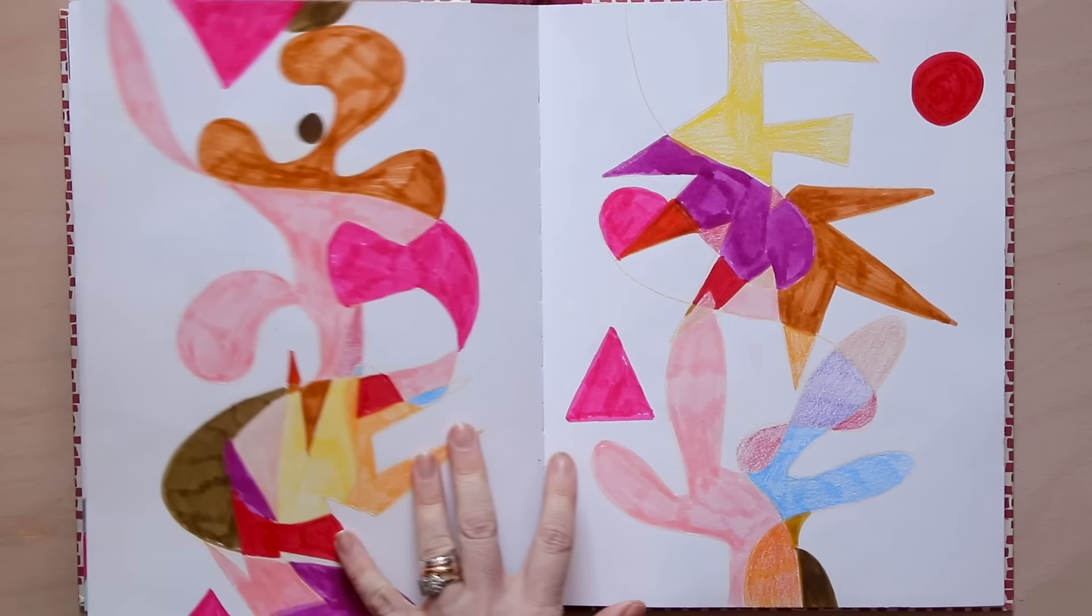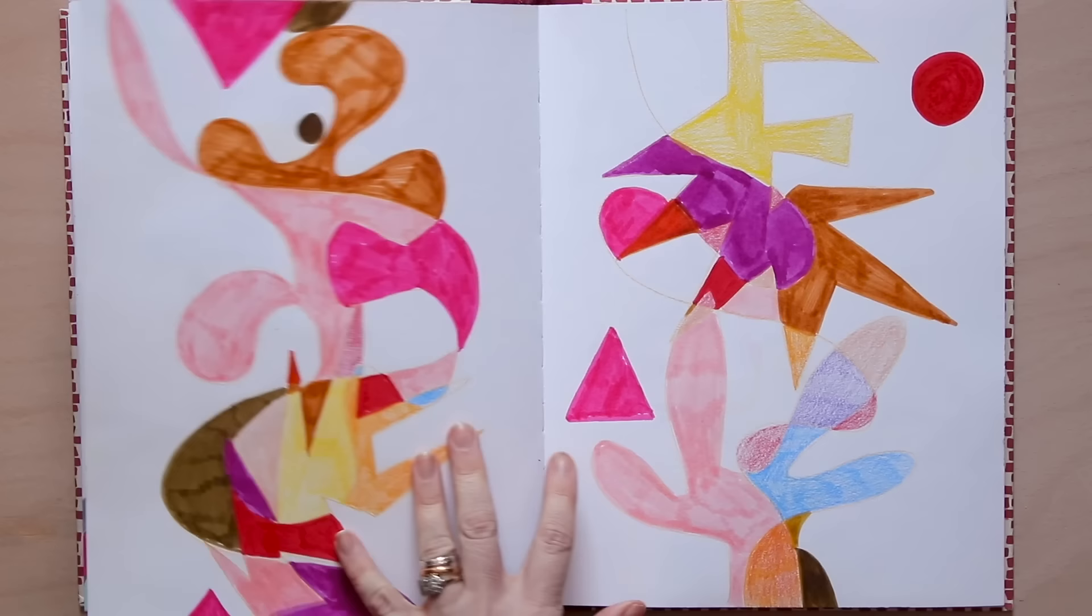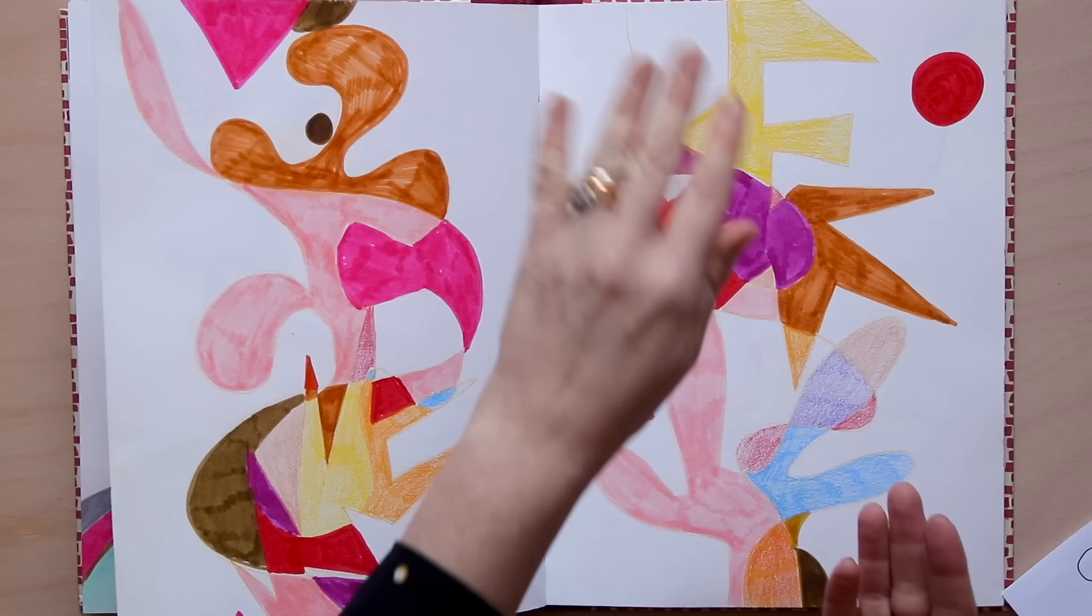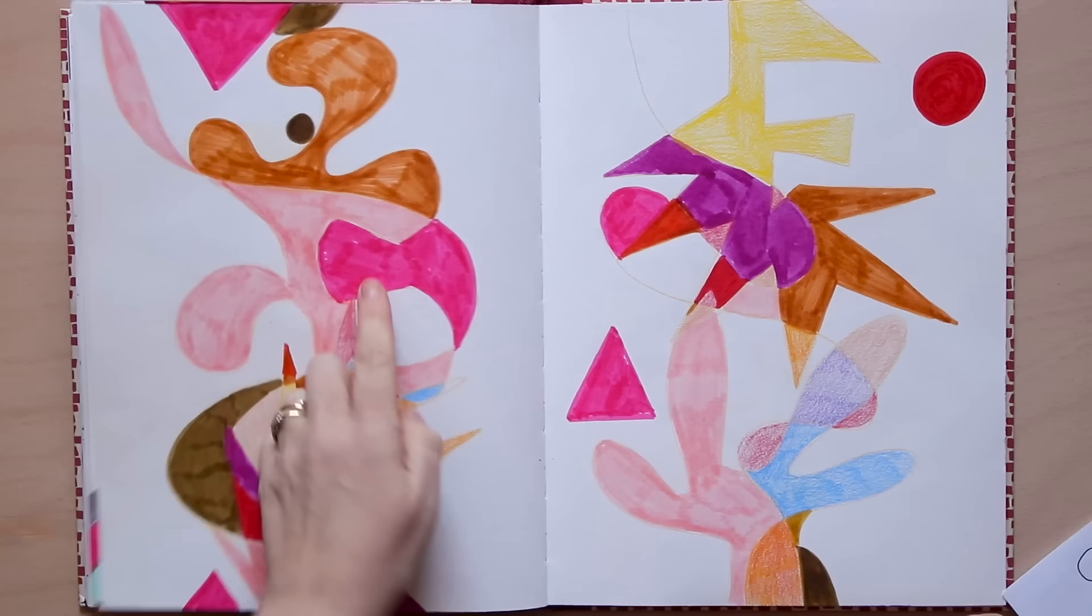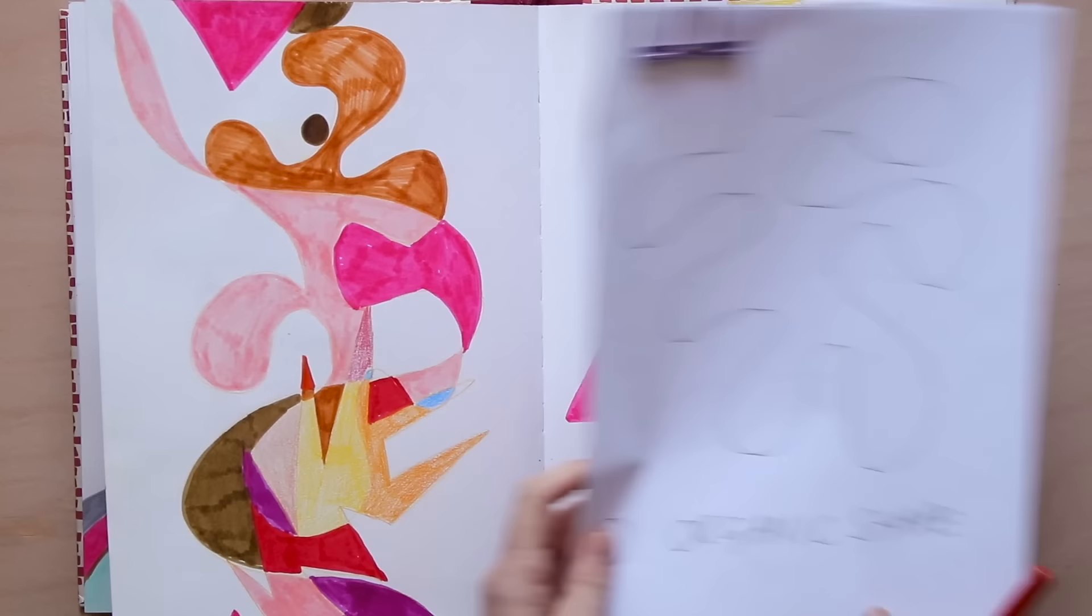So these pages were made by overlapping shapes on top of shapes. And when you draw a shape on top of a shape, where the lines intersect, it creates these unusual shapes and patterns, which you may not have created in and of yourself. So let me show you how I did that.